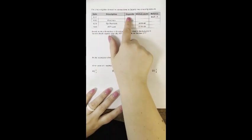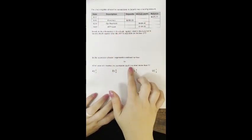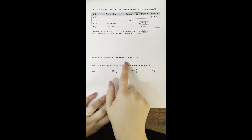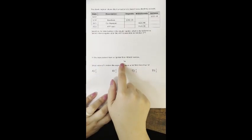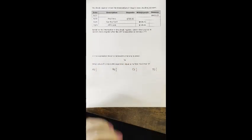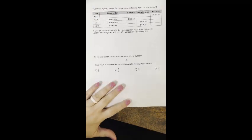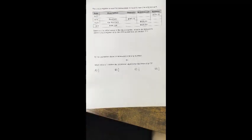All right guys, so today we're going to review two more topics on our homework. The first one we're going to talk about is a check register with deposits and withdrawals, and the second one we're going to talk about is a multiplication problem involving fractions. So we're going to quickly go through those, and then you guys can answer your homework questions.